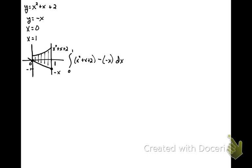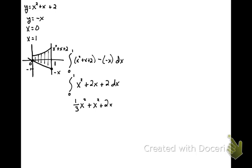To find the area between the two curves we integrate from zero to one: the upper curve x² + x + 2 minus the lower curve −x, dx. Combining like terms gives us x² + 2x + 2 dx. Integrating yields (1/3)x³ + x² + 2x evaluated from zero to one. Substituting in one gives one-third plus one plus two, minus zero. The total area is three and one-third, or 10/3.